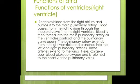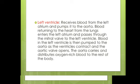The blood becomes oxygenated and returns to the heart via the pulmonary veins. The left ventricle receives blood from the left atrium and pumps it into the aorta. Blood returns from the lungs, enters the left atrium, and the left ventricle pumps it out through the aorta when it contracts.